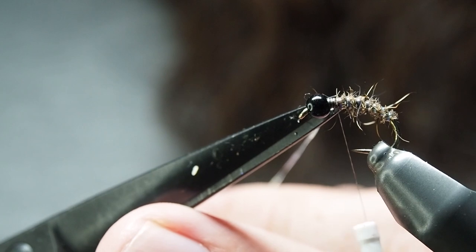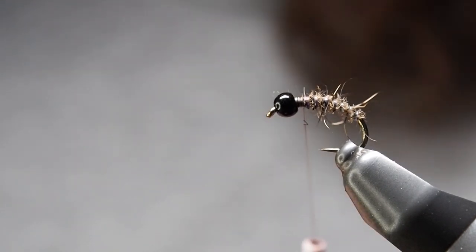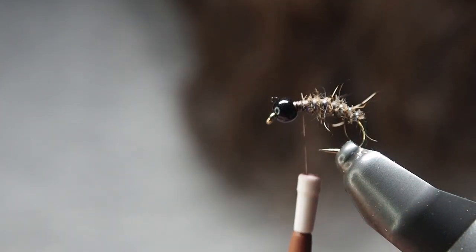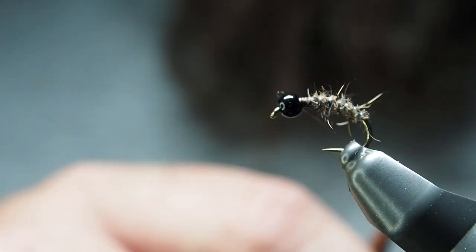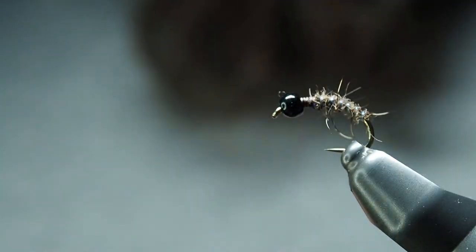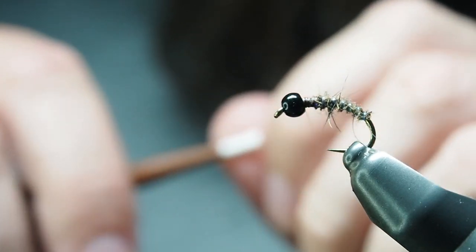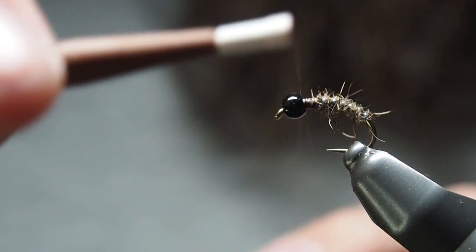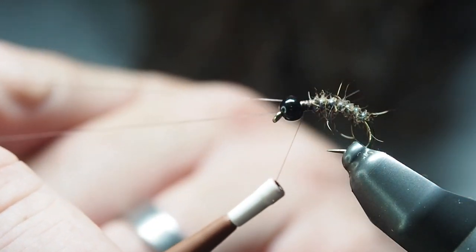This next step is creating the loop for our CDC dubbing loop. I find it a bit easier to do it at this point rather than after you've put the little dubbing ball here. I'll pull some thread from there out towards me and pick how much you want. I'm only using the length of one CDC for this. Once you're there, hook your finger in and pull out some more so you've got just a little over double what you need.